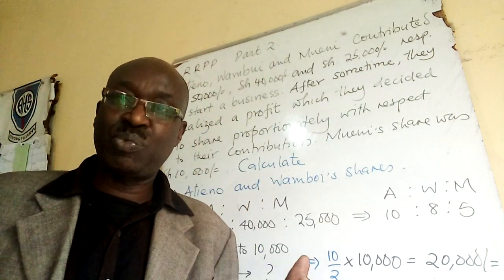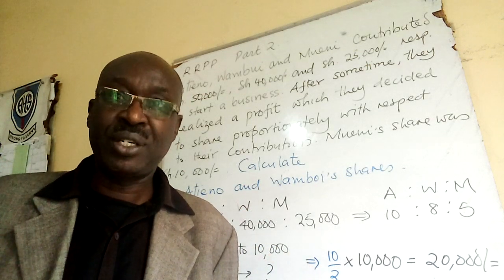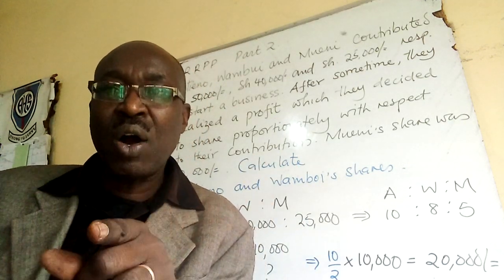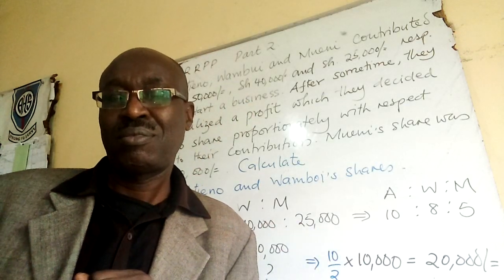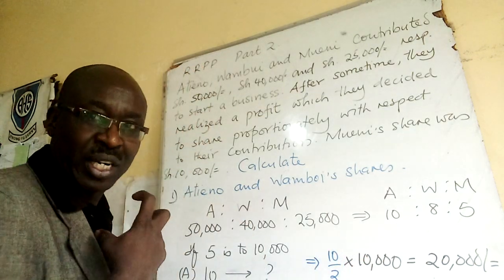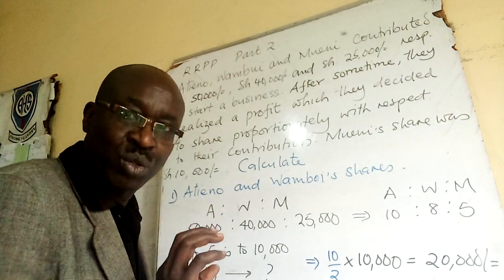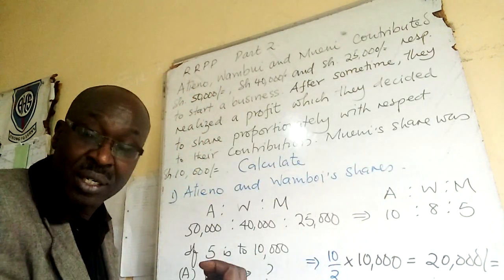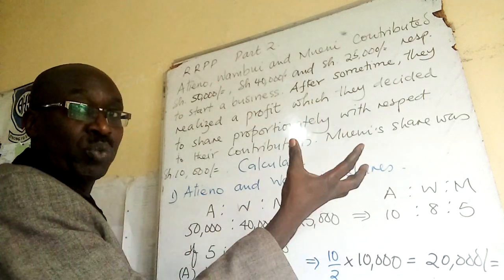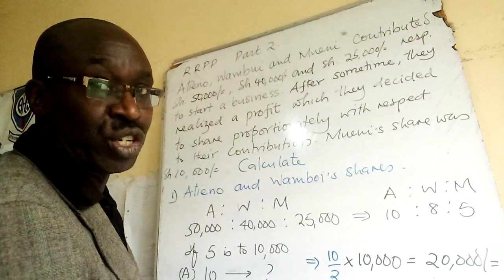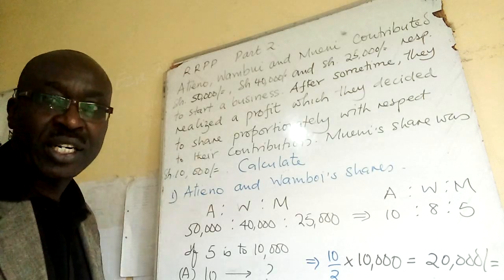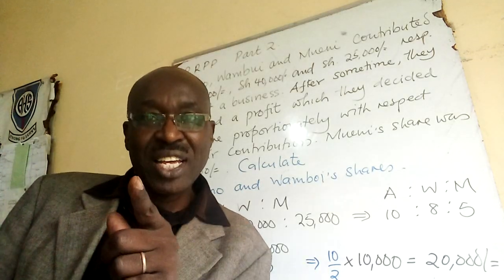When you contribute towards a business, you also expect some returns — profit. That profit will be divided according to how you contributed, so that it is equitable. It depends on what you're giving; if it is little, you also get little. We are told Mueni's share was ten thousand.